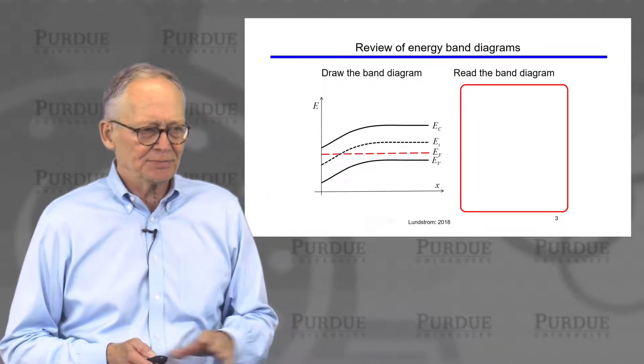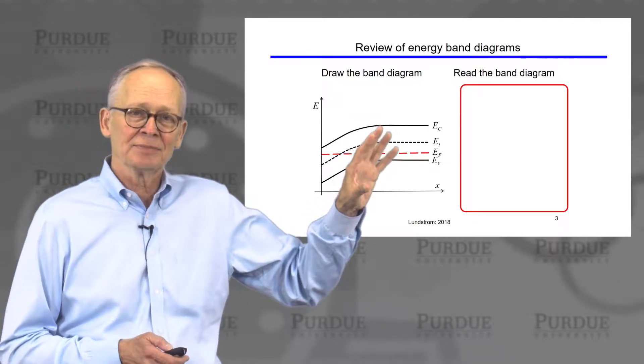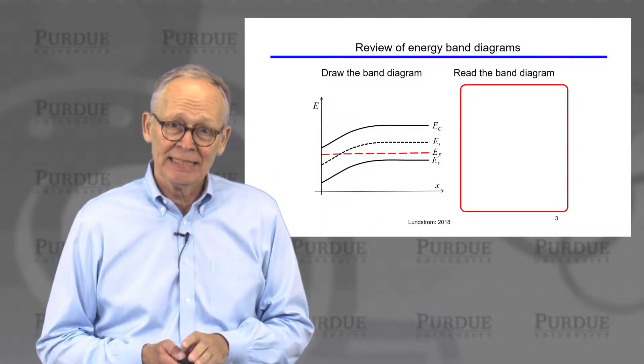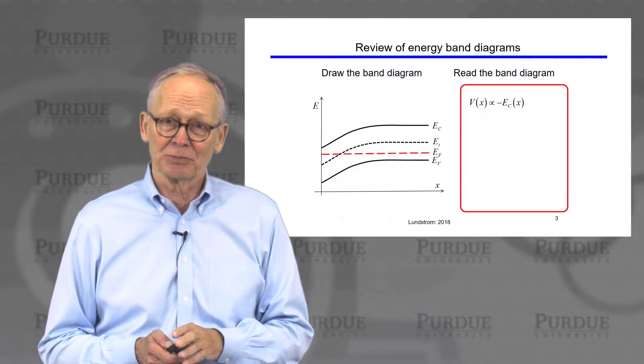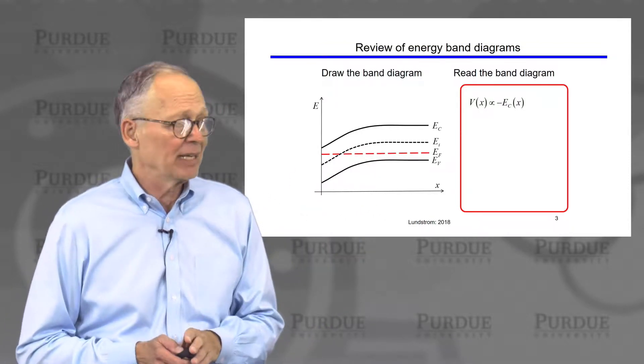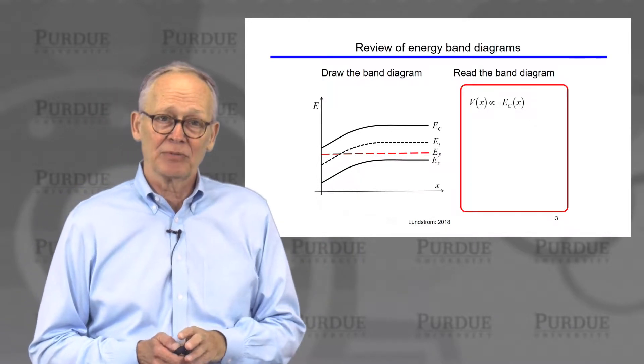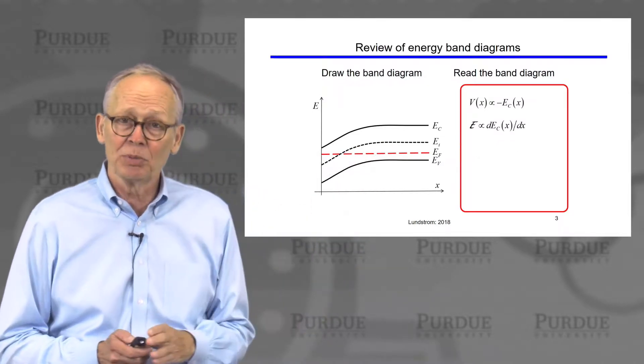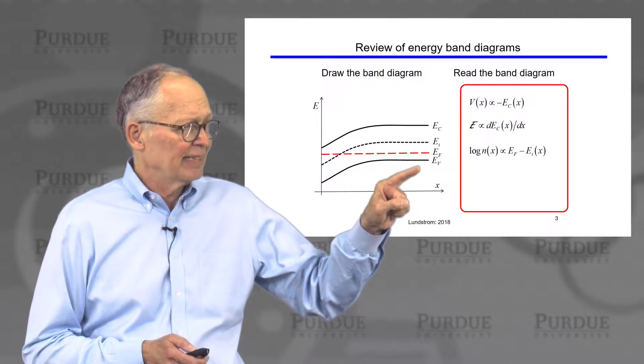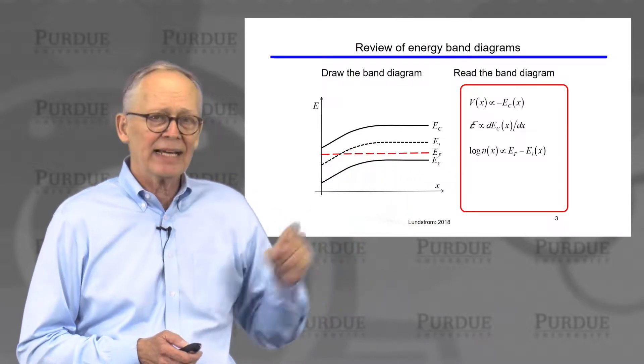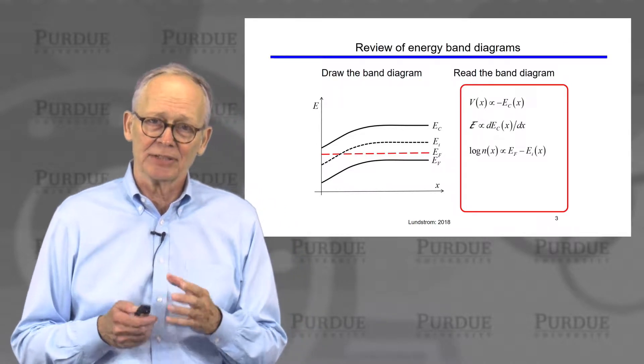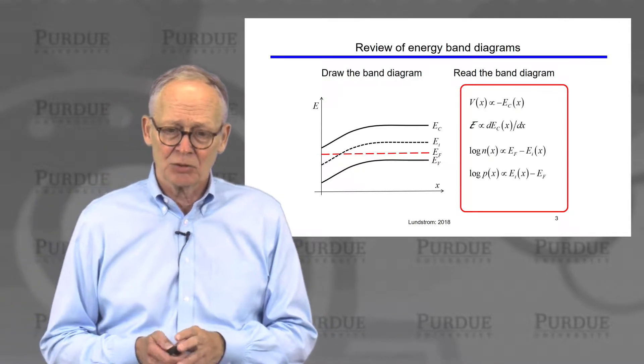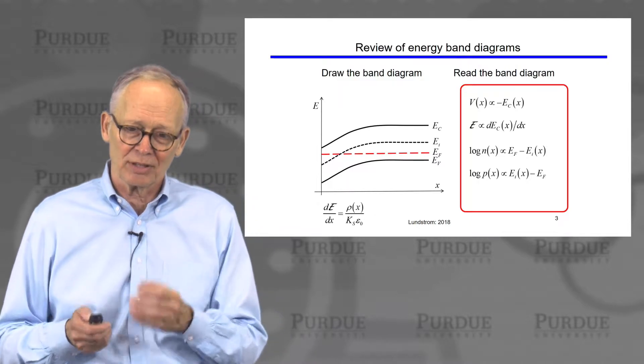In terms of energy band diagrams, an energy band diagram, the first task when analyzing any device problem or semiconductor problem is to draw an energy band diagram. Bands bend when the electrostatic potential is changing with position. The second task is to read the energy band diagram. If we want the electrostatic potential, we just flip one of the bands upside down. If we want the electric field, we take the slope of one of the bands. We recognize that the electron and hole densities depend exponentially on the separation of the Fermi level from the intrinsic level, or the Fermi level from the conduction band, or the Fermi level from the valence band. So we can easily read off qualitatively the hole and electron densities that way.